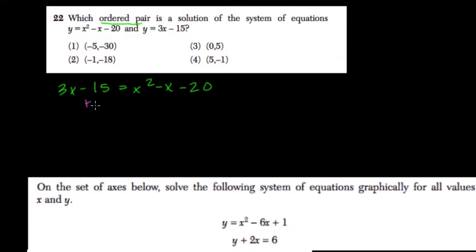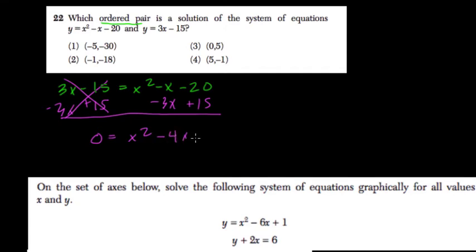To solve this, I would add 15 and subtract 3x from both sides. So minus 3x plus 15. This cancels out to 0. Equals x squared minus 4x minus 5.